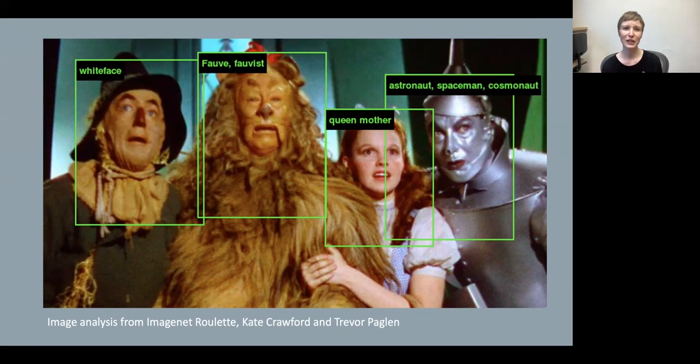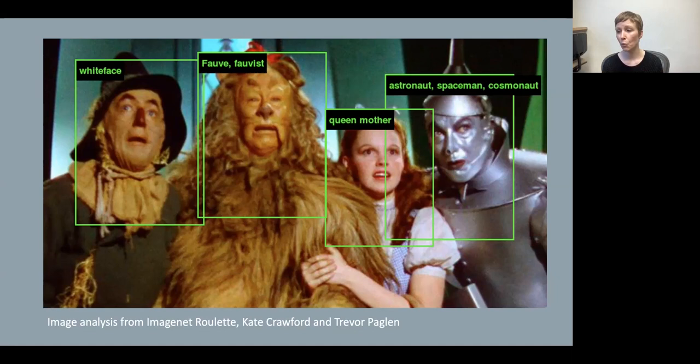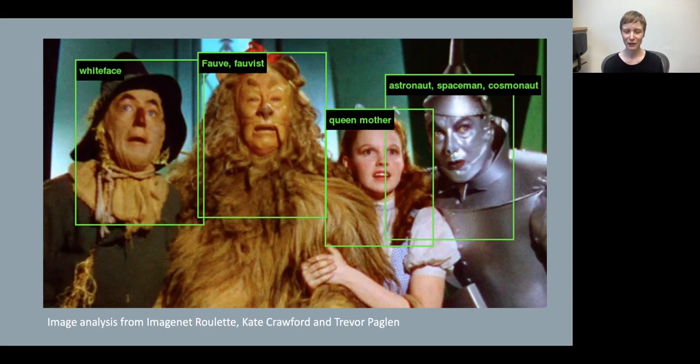You can see how ImageNet Roulette works in a sample image of characters from The Wizard of Oz, which produces an array of surprising labels for these familiar characters. The scarecrow is labeled as being in whiteface; the lion is called a 'fauve' — a French term and painting movement meaning wild or primitive; Dorothy is labeled as the queen mother; and the tin man is an astronaut, spaceman, or cosmonaut. These are not associations we would make ourselves, but based on the appearance of their faces, these are the characterizations the program generates.